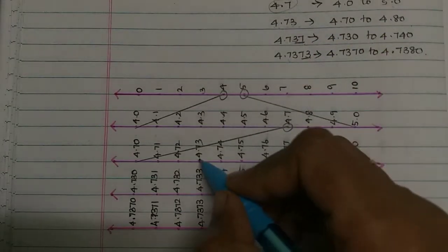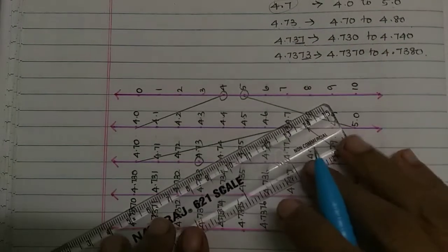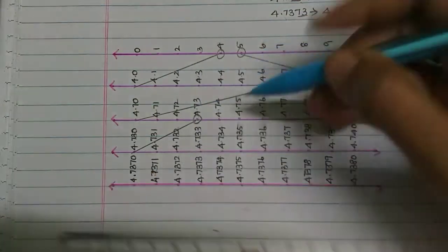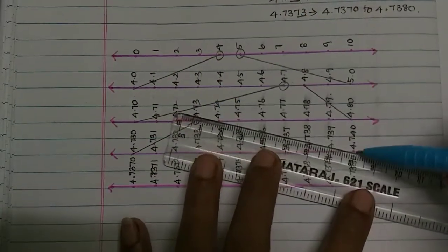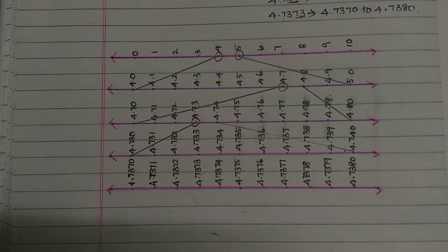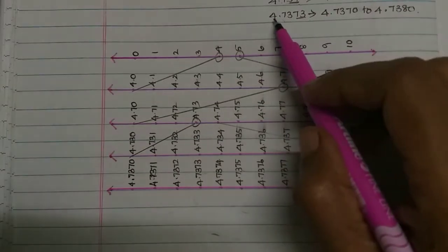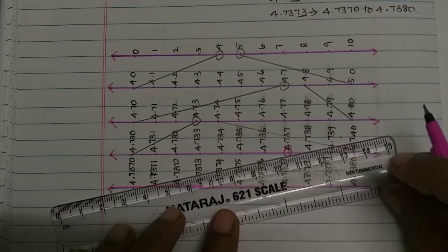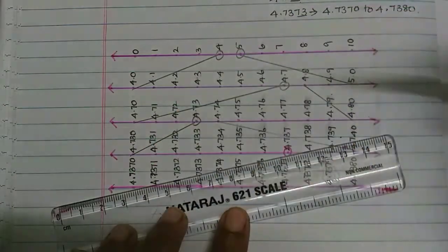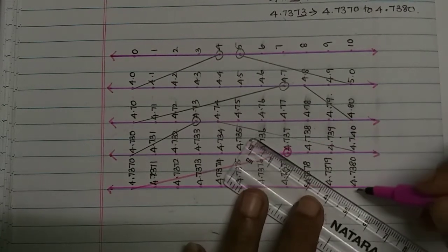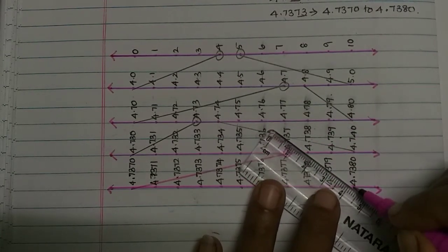Then add the 4.73, so 4.73 here. So 4.730 join, then next number, 4.740 mark, okay. Sorry, next, 4.737 mark, then 4.738 mark, 4.7380 connect, okay.